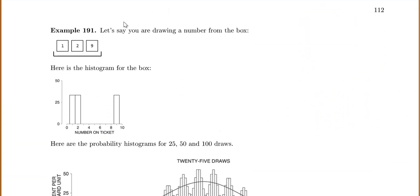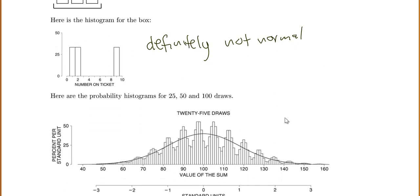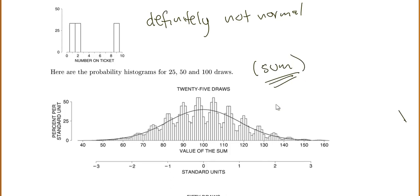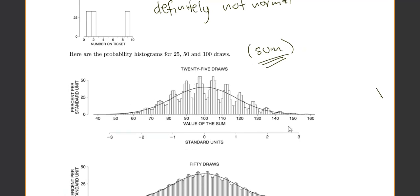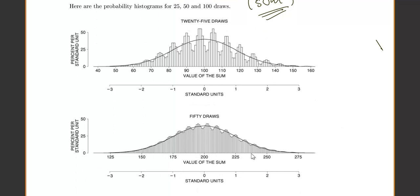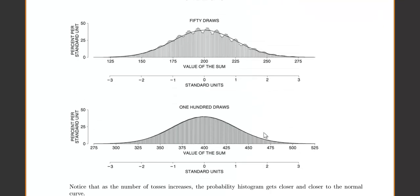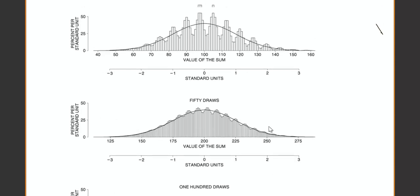Let's say you're drawing a number from a box containing tickets 1, 2, and 9. Here's the histogram for the box — it's definitely not normal. But if we look at the probability histograms for the sum of 25, 50, and 100 draws, at 25 draws you see interesting peaks, because the original box values have two separate peaks. At 50 draws it's looking fairly normal — you still have some small peaks but it doesn't look too bad. At 100 draws, it looks perfectly normal. As the number of draws increases, the probability histogram for the sum gets closer and closer to the normal curve.